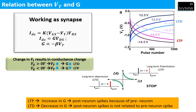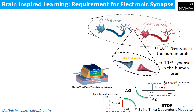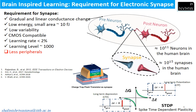What are the requirements for an electronic device to work as a synapse? It should have gradual and linear conductance change, lower energy equivalent to 10 femtojoules, low variability, and be CMOS compatible. The learning rate should be less than 2%, the learning level should be equal to or more than 1000, and it should require minimal peripheral circuits.